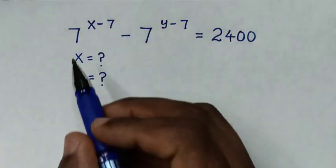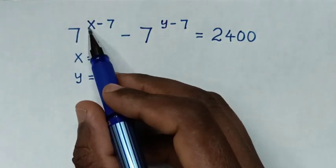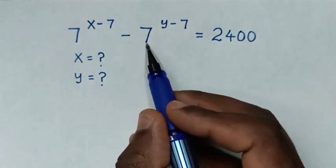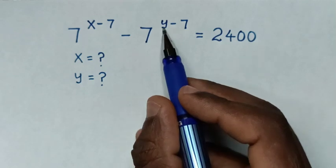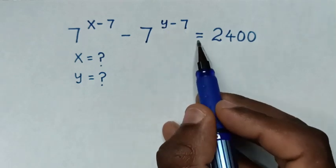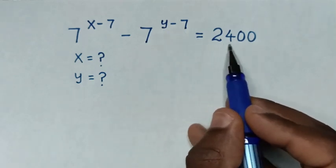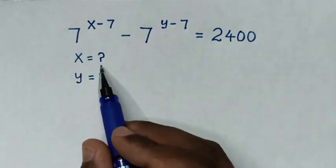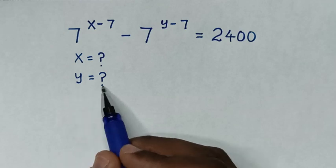Hello. 2 of 7: the power of x minus 7 minus 7 power of y minus 7 is equal to 2400. Find the value of x and the value of y.